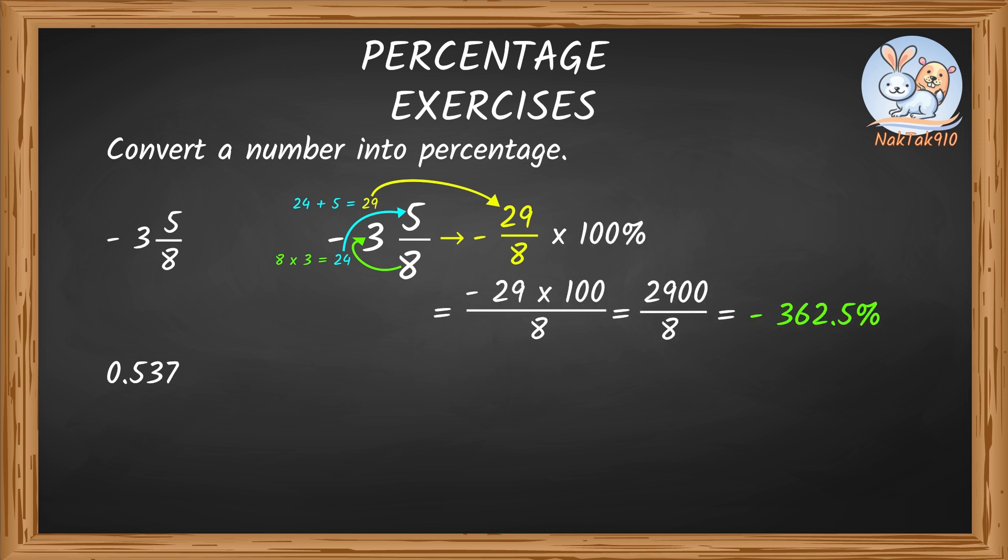Let's try the next problem. 0.537 times 100%. Multiplying a decimal number by 100 moves the decimal point to the right by two digits. So 0.537 times 100% gives us 53.7%. Very good, Tack.